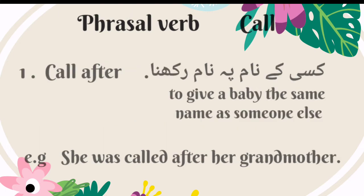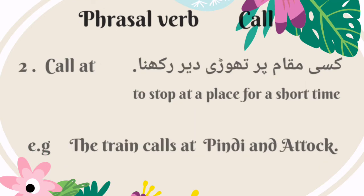The first phrasal verb of call is 'call after.' Its meaning is to give a baby the same name as someone else — Urdu mein is ka matlab hai kisi ke naam pe naam rakna. For example: she was called after her grandmother. The second phrasal verb of call is 'call at.' Its meaning is to stop at a place for a short time — Urdu mein is ka matlab hai kisi makaam par thodi deir rukna. For example: the train calls at Pindi and Atak.